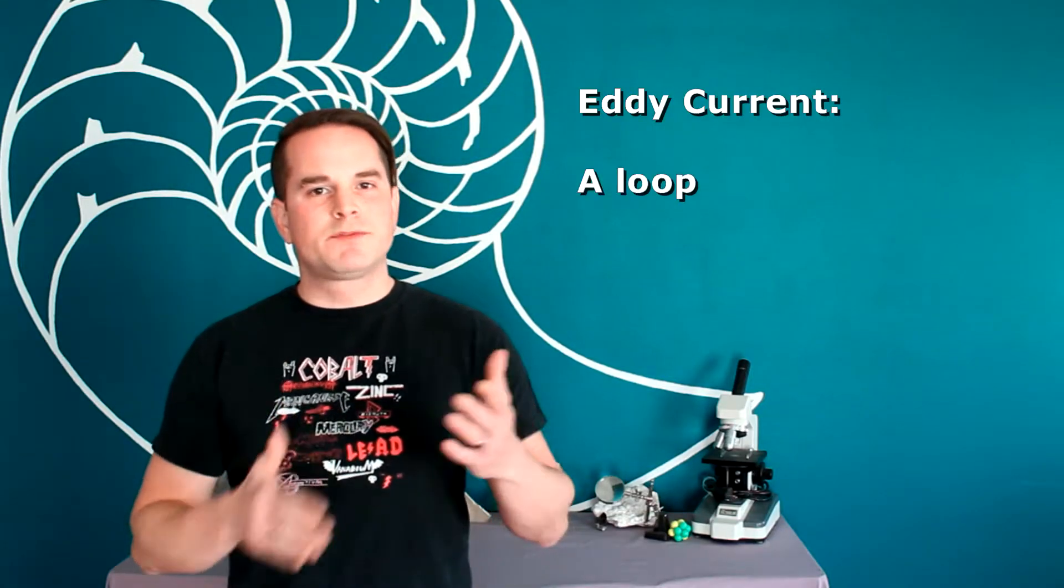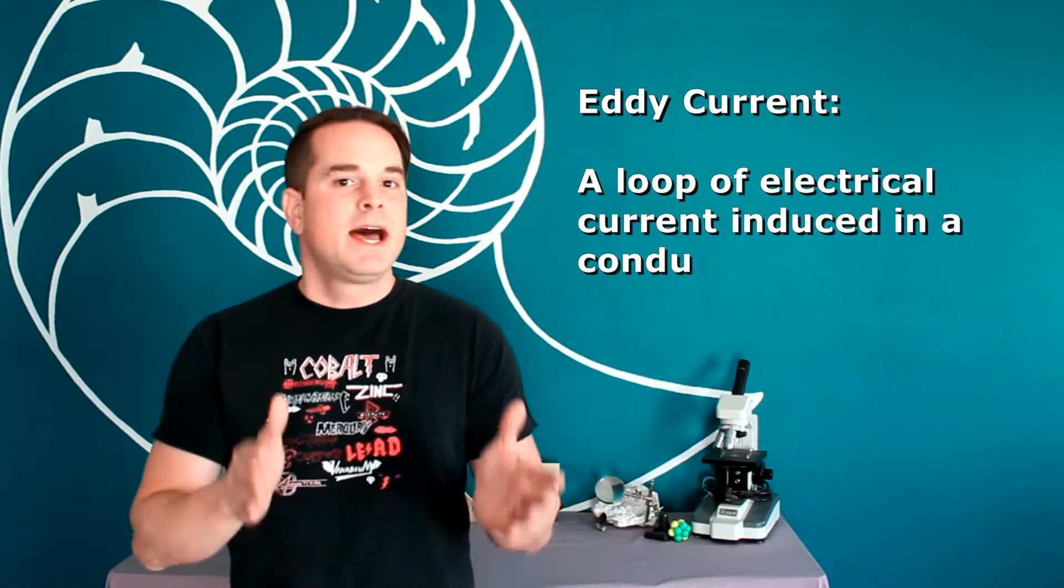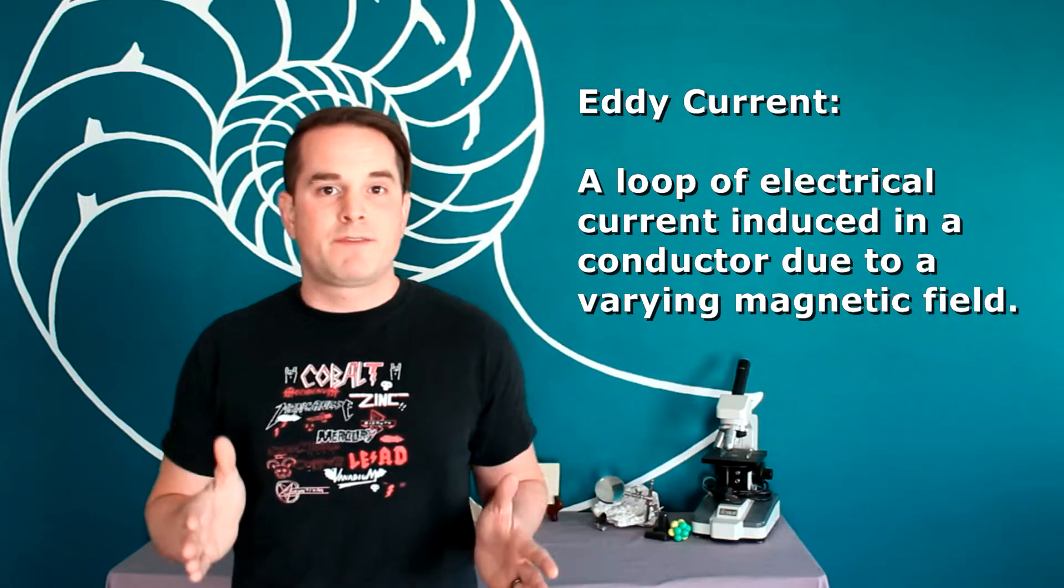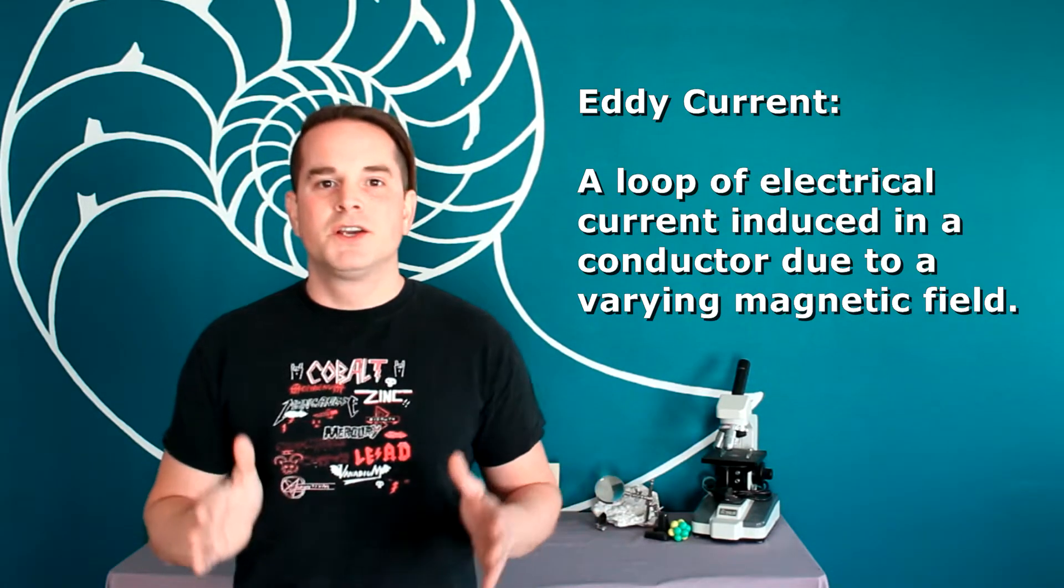Eddy currents are loops of electrical current that are being caused by either a moving or varying magnetic field or that conductor moving through a varying magnetic field. Now, as we also saw in that episode, whenever a current is produced this way, it also then will produce its own magnetic field.